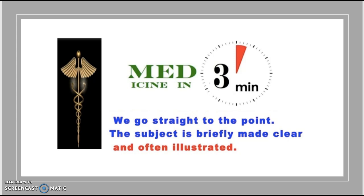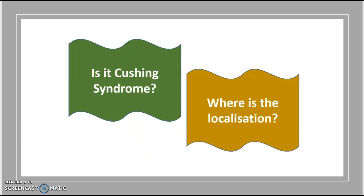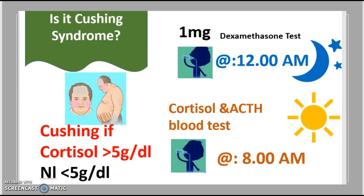When dealing with Cushing syndrome, there are two questions you want to ask. The first is: is it Cushing syndrome? The second, once you've confirmed it is, is: where is the localization?